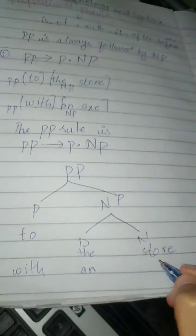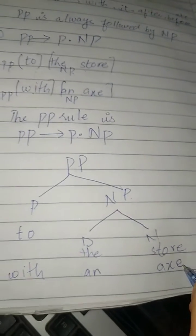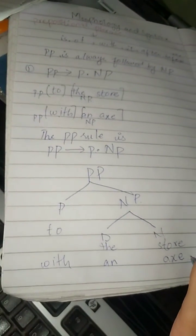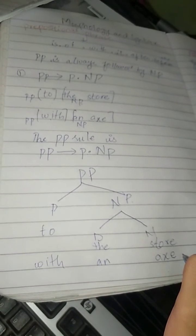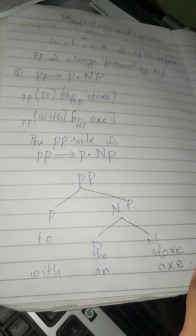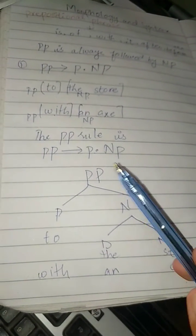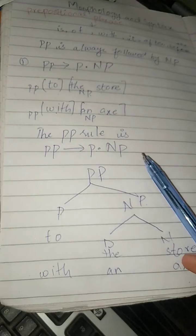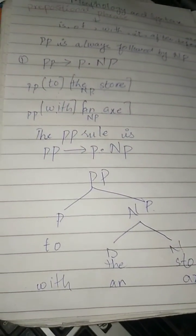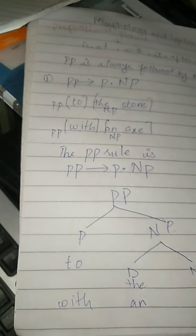The second point is that the preposition is optional. We may attach a preposition to the noun phrase or we may not, because it is optional — it depends on the sentence.